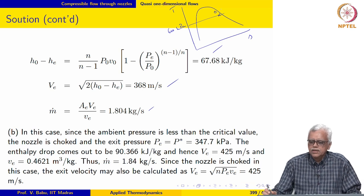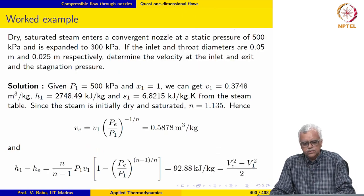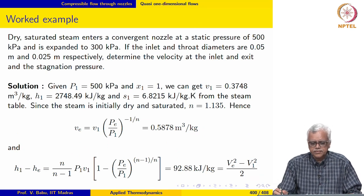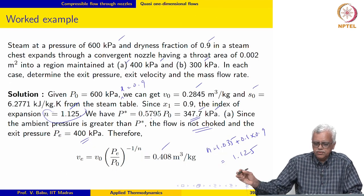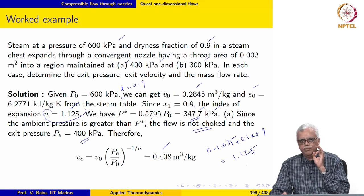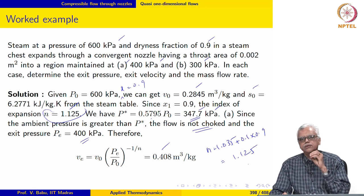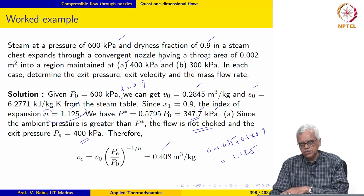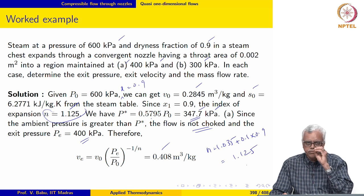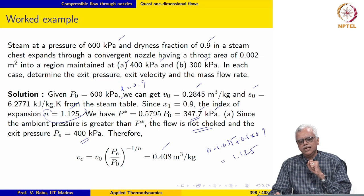The steam undergoes isentropic expansion. Once we know the final pressure — 400 kPa for case A — we can use either the expressions derived earlier or the steam tables. For determining the value of p* alone, we need the expression derived before, and for that we require the value of n.